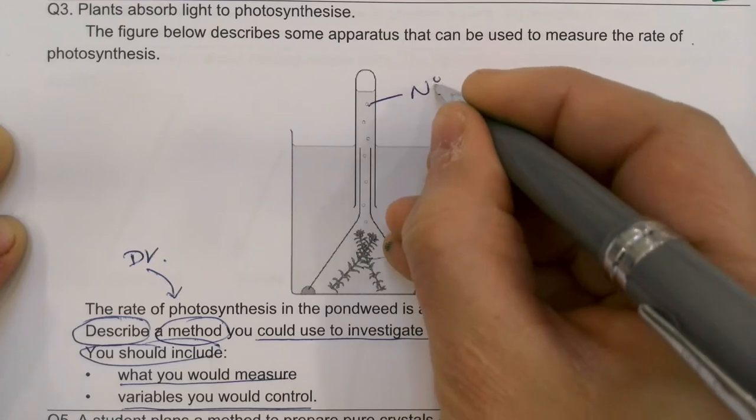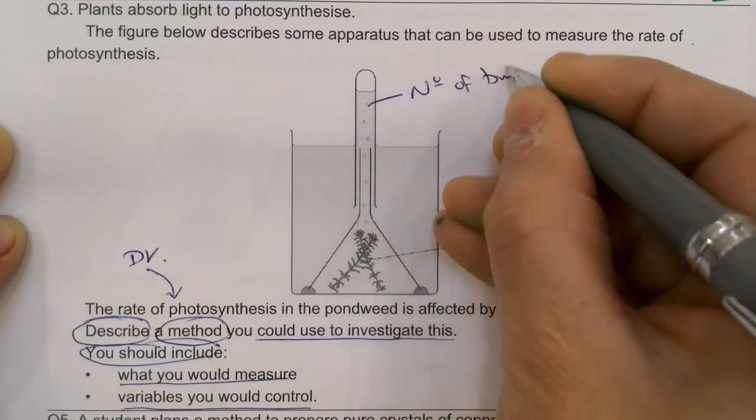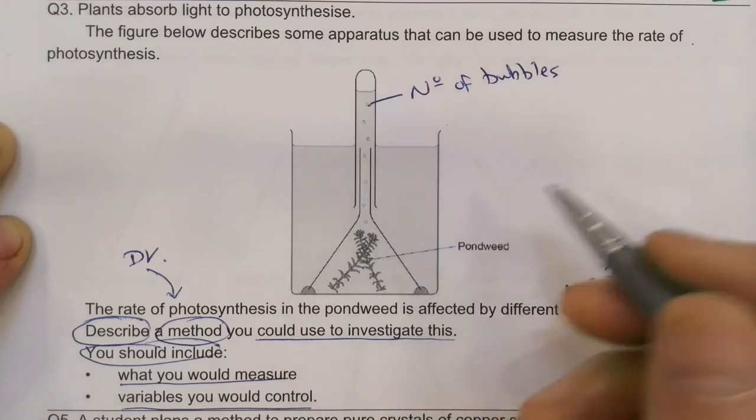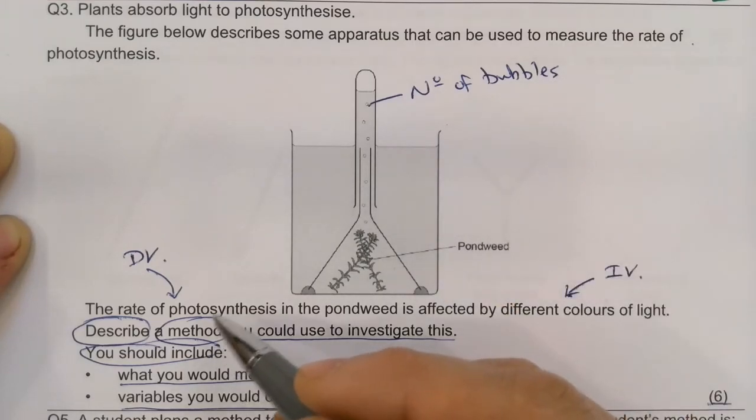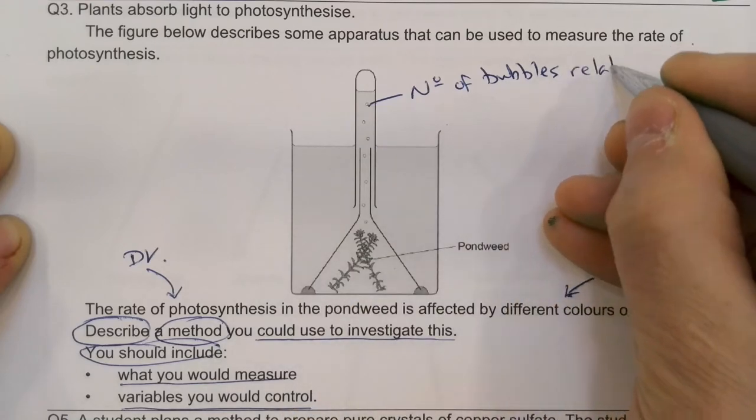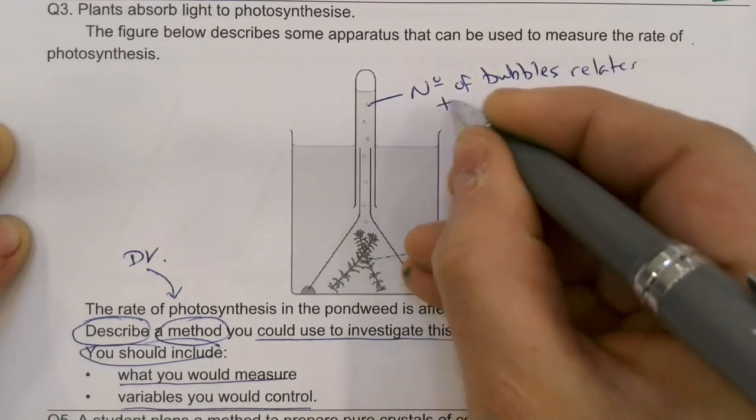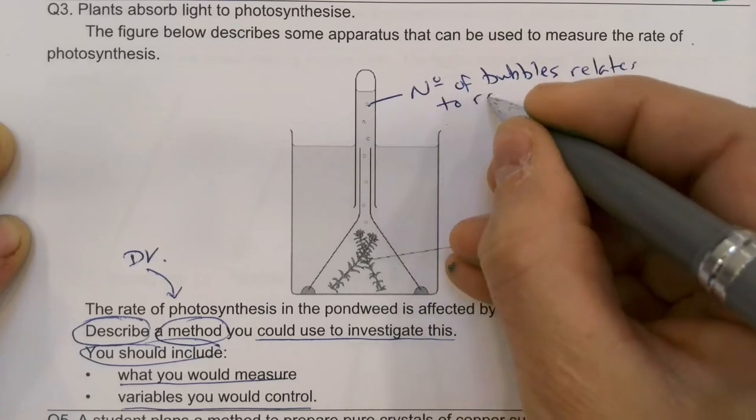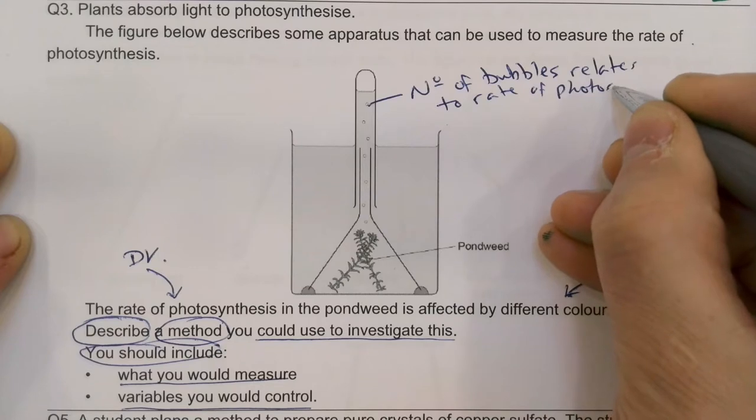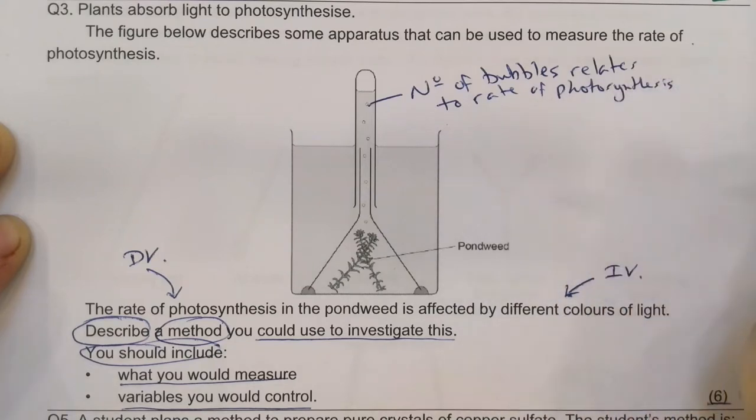Well, I'm going to count the number of bubbles. Because the number of bubbles, the faster, the more bubbles are made, the higher the rate of photosynthesis. So the number of bubbles relates to rate of photosynthesis.